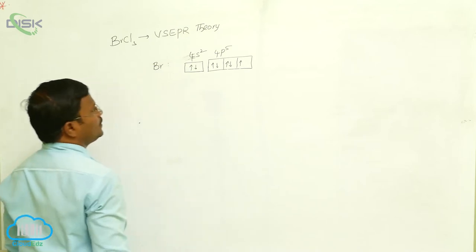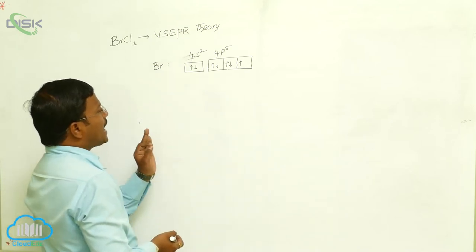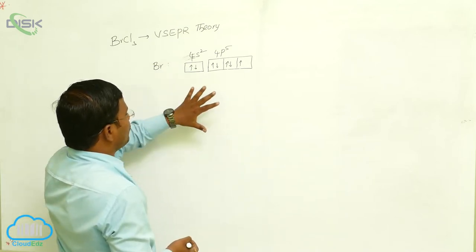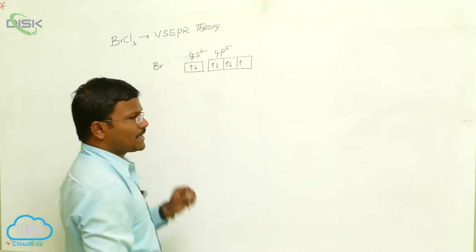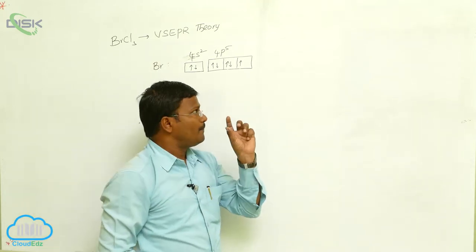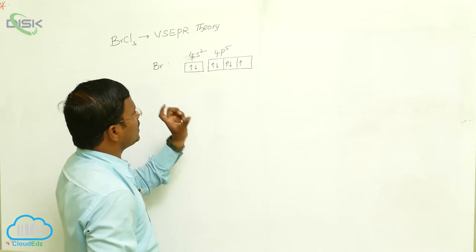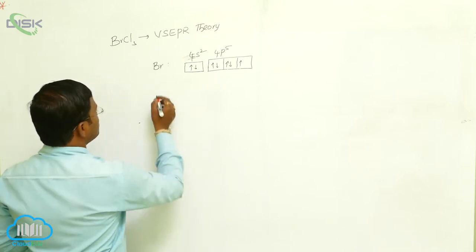In its ground state electron configuration, bromine has 3 orbitals with paired electrons, whereas